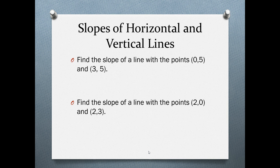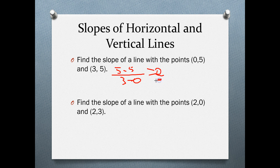Slopes of horizontal and vertical lines. Let's calculate the slope of a horizontal line. We'll call one point x2 and y2, and the other x1 and y1, then subtract: 5 minus 5 over 3 minus 0. That gives 0 over 3, which is just 0. The slope of a horizontal line is 0. This makes sense because the y values never change as you move left or right — they stay constant.